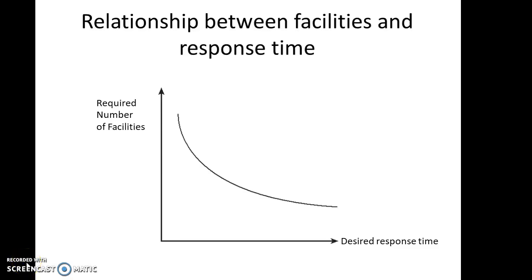Now we see the relationship between facilities and response time. Facilities includes mainly production and storage. Production means where the particular product is manufactured. Storage mainly refers to warehouses, distribution centers, and stores. Response time is the time taken from when the customer places the order until the order is executed — that means the product is delivered to the customer.